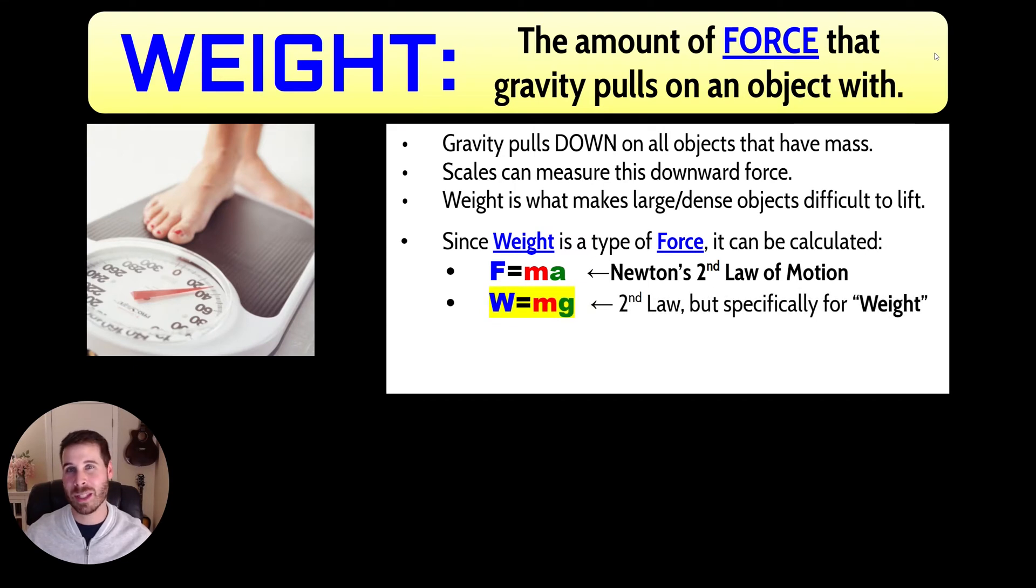If we want to customize this equation to solve for the weight of an object specifically, then we need to change some of the letters around a little bit to represent this specific type of force. So this is the second law of motion, but specifically for weight. You can see that I've switched out the letter F for W because weight is a kind of force. And you can see that I've swapped out the letter A for the letter G because gravity is something that causes objects to accelerate. So G is a kind of A and W is a kind of F.